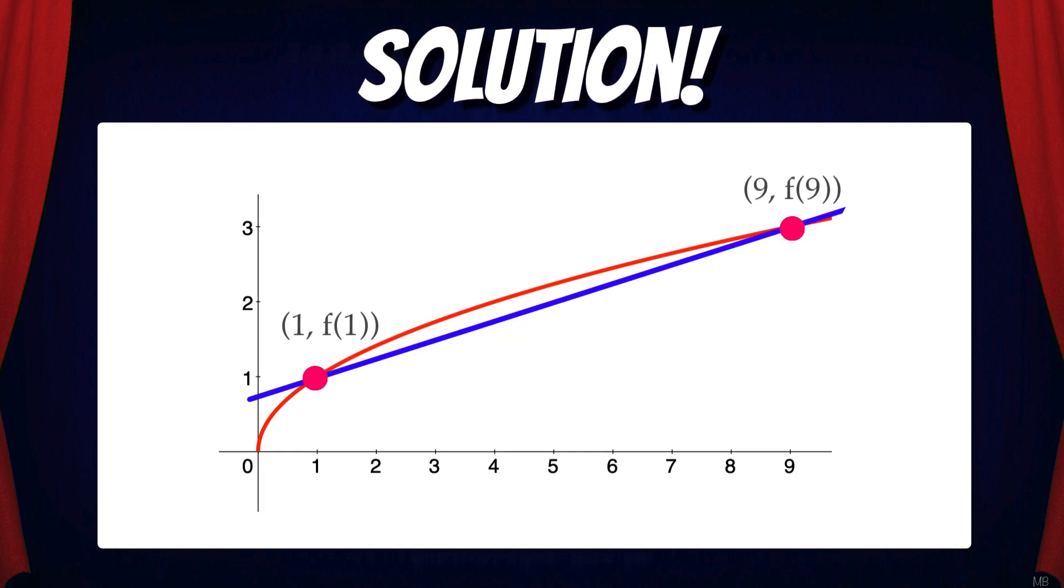We need to find the slope of the secant line that connects the points (1, f(1)) and (9, f(9)). This corresponds to [f(9) - f(1)] / (9 - 1).